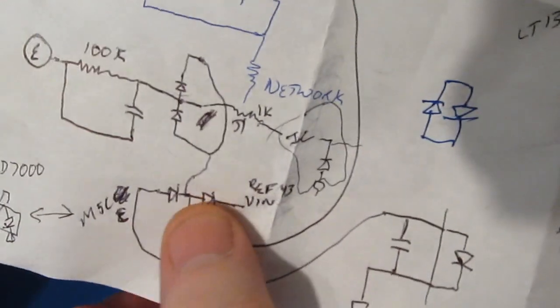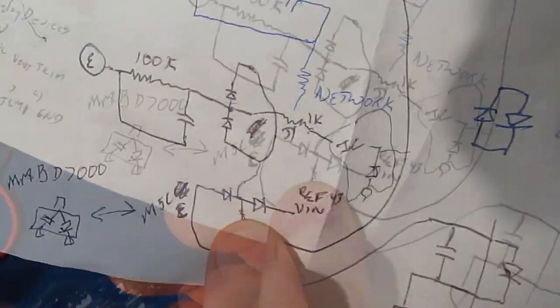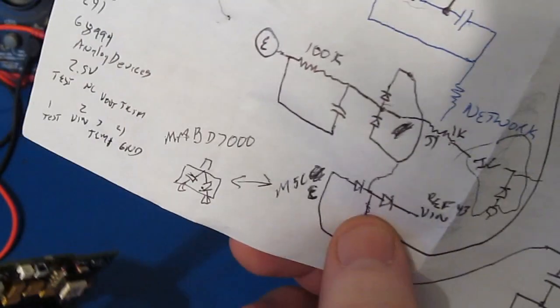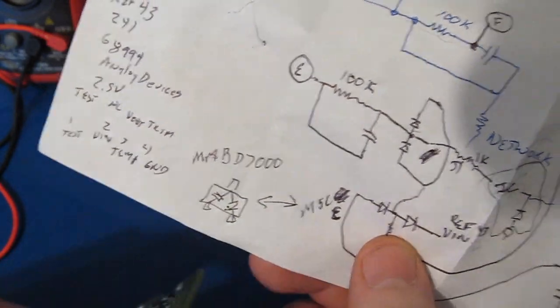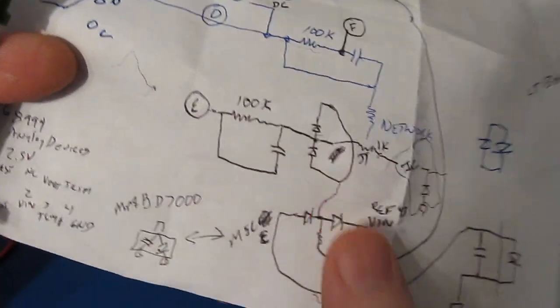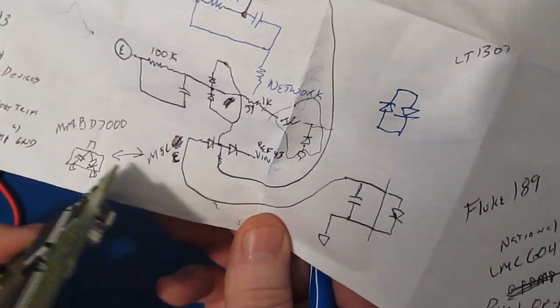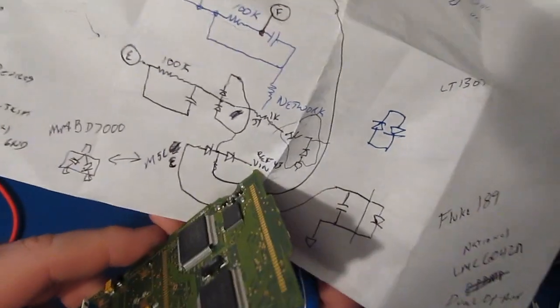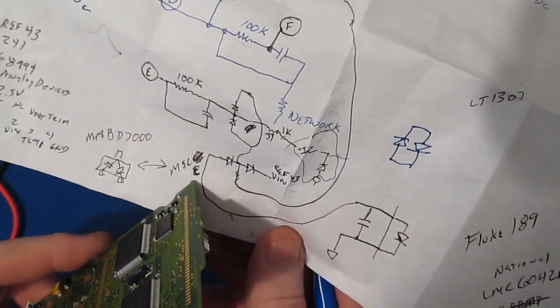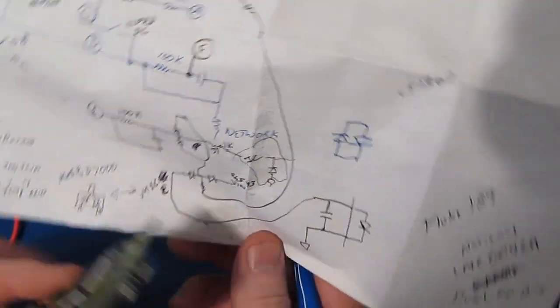The one side goes off to the center of this device. This particular device is marked M5CE, which is a MMBD 7000, and that's a dual diode pack similar to what this part is. If we look at the output of this, this goes off to the V ref 43 and it goes off to one of the pins of the IC.